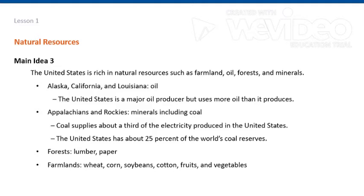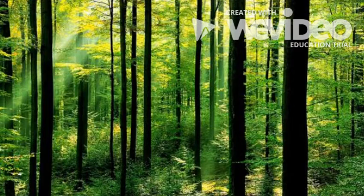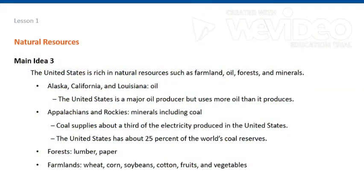Other important resources include forest and farmland, which cover much of the country. The trees in our forests provide timber used in constructing buildings, and wood from these trees is also used to make paper. Farmland produces a variety of crops including wheat, corn, soybeans, cotton, fruits, and vegetables.